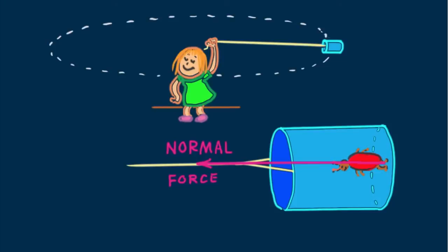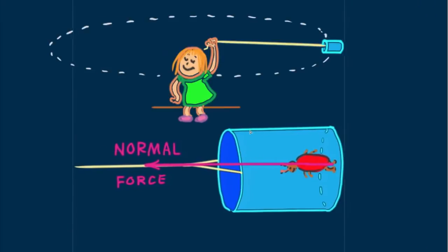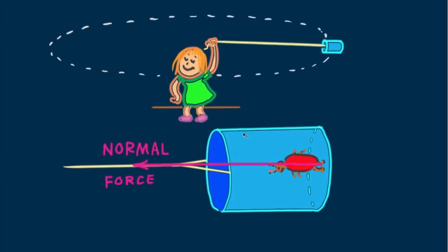From our stationary frame of reference, we watch the whirling can very closely and see no outward force on the can and no outward force on the bug. Any forces on the can and the bug are inward-directed forces, what we learned previously.